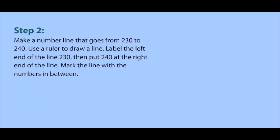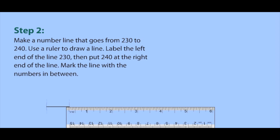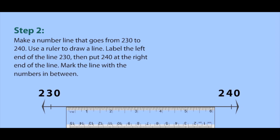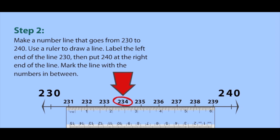To find out, we'll make a number line that goes from 230 to 240. Use a ruler to draw a line. Label the left end of the line 230, then put 240 at the right end of the line. Mark the line with the numbers in between. See? 234 is almost in the middle, but not quite.